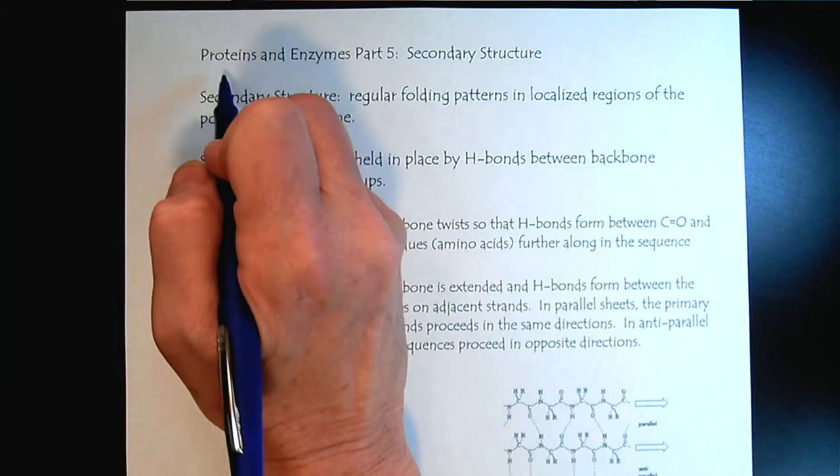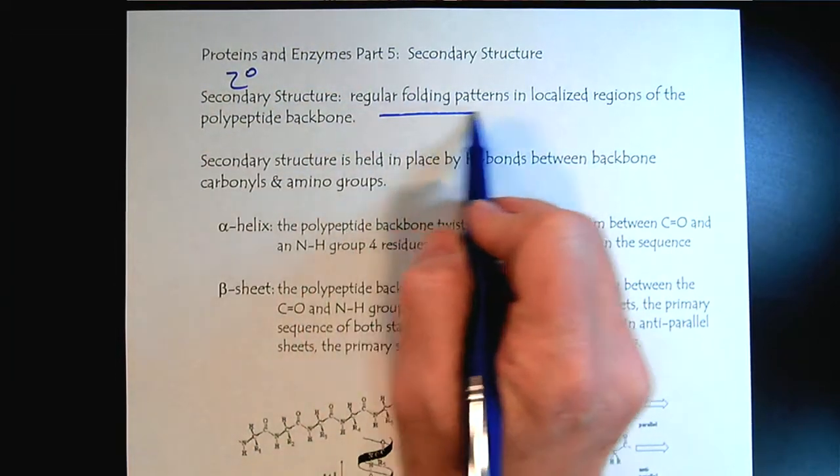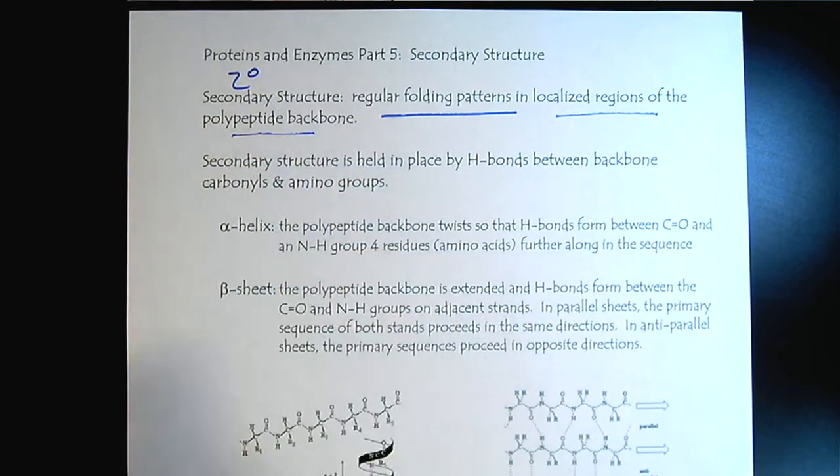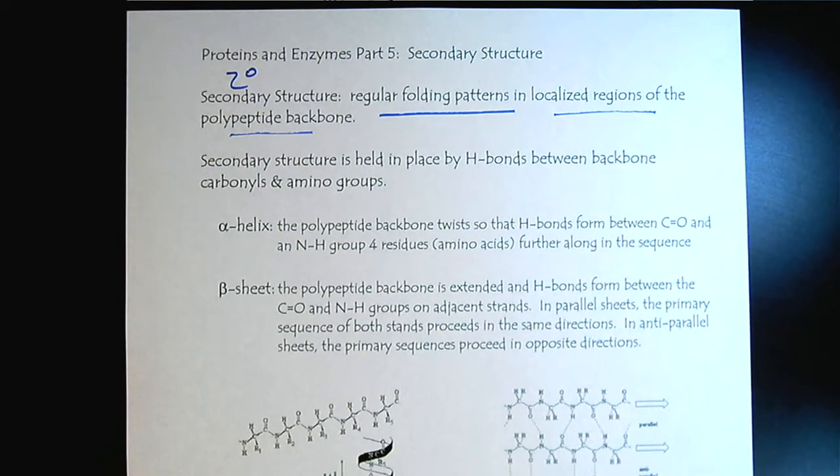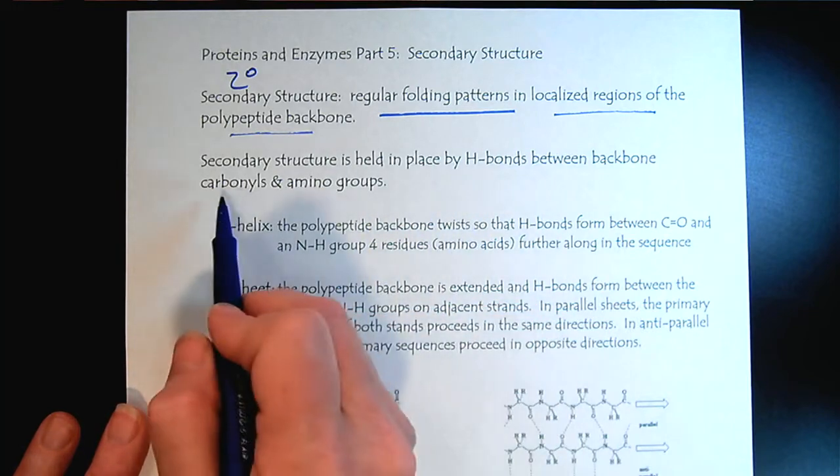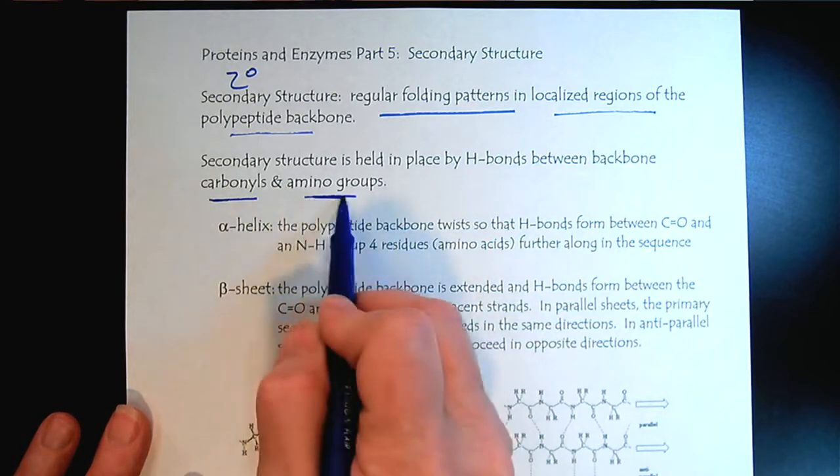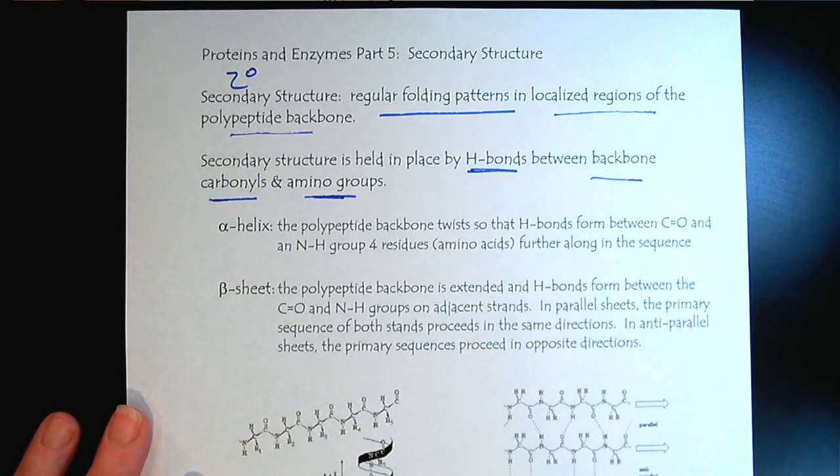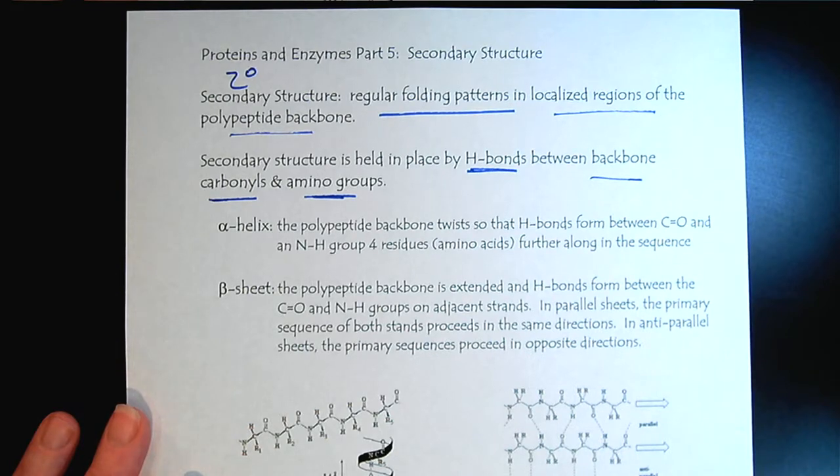The secondary structure will have regular folding in localized regions of the backbone. It's all about the carbonyls and the amino groups in our backbone, and H bonding is the deal here. The secondary structure is all about H bonding within the polypeptide backbone.